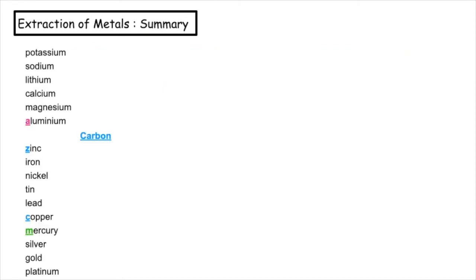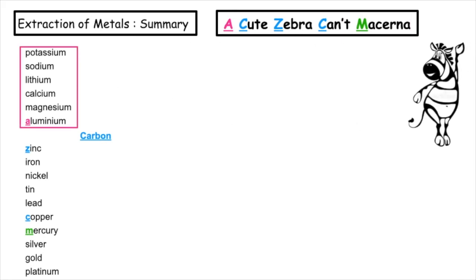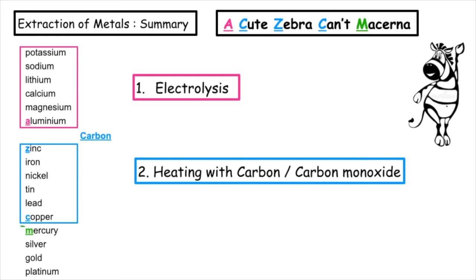The little story that I remember to remember the different types of extractions of metals is A Cute Zebra Can't Macarena. Aluminum and above in the reactivity series need electrolysis to split them up. Between copper and zinc, we would be heating with carbon or carbon monoxide.